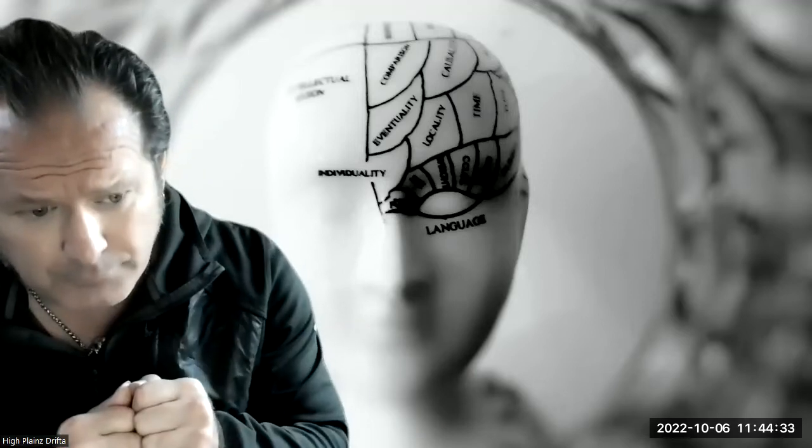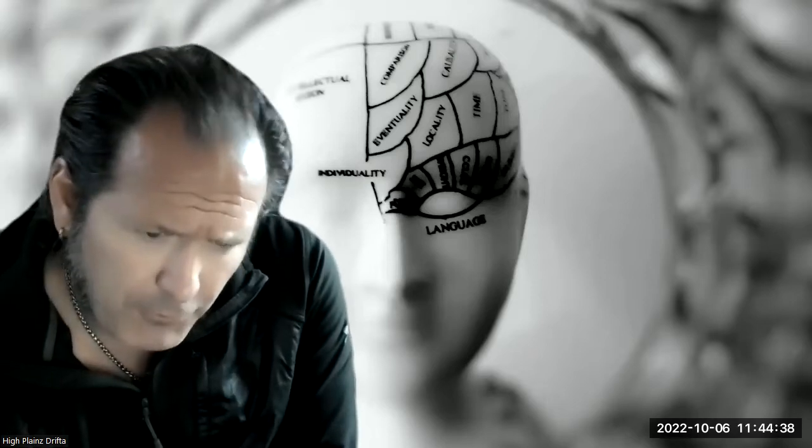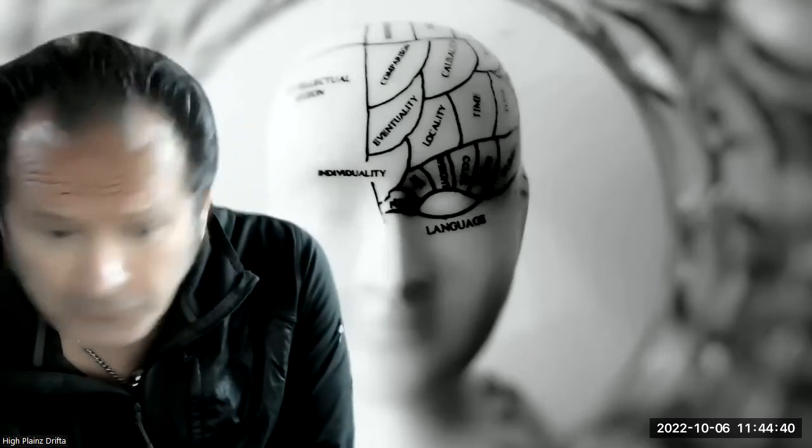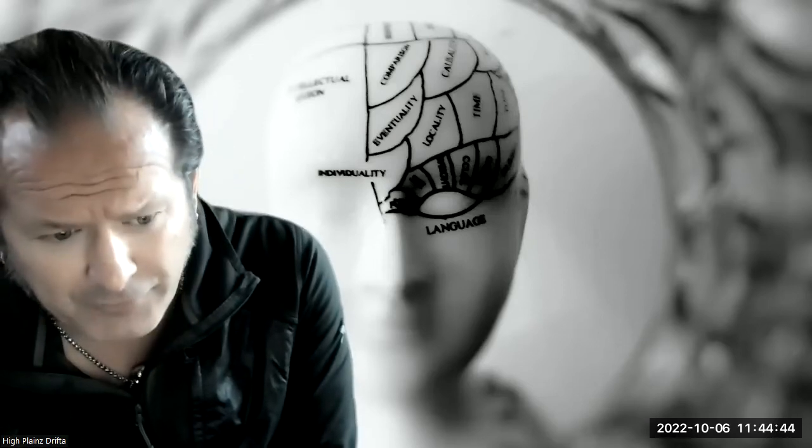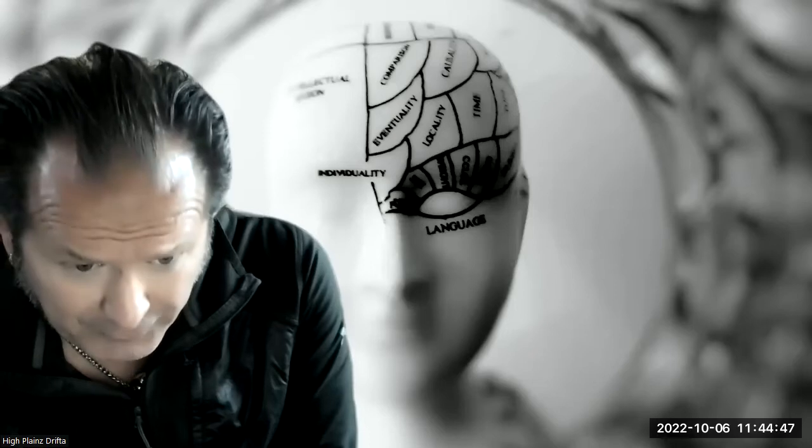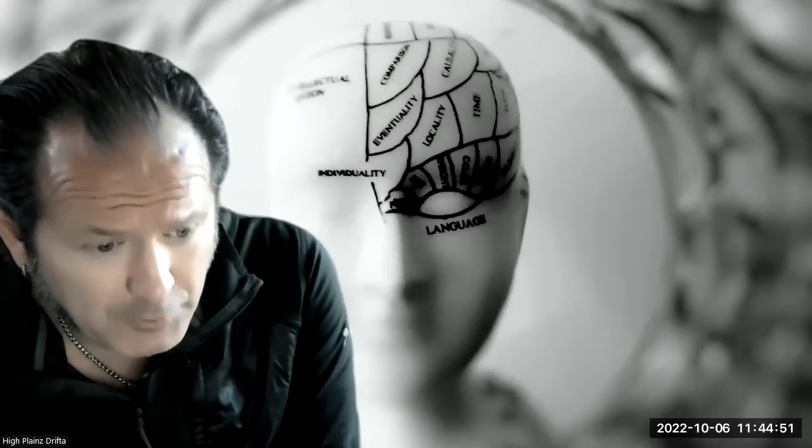The right hemisphere of the brain is very different. It thinks in terms of pictures and stories. It is holistic, dealing with all aspects of an idea or situation simultaneously.